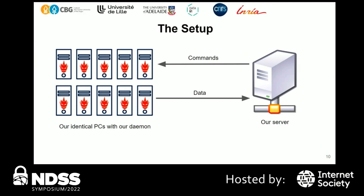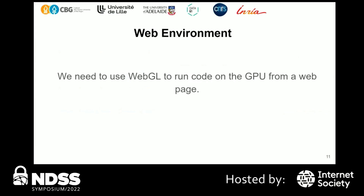We have our server where we want to collect data, and all our identical machines. We coded a daemon that sits on each machine. Our server can interact with this daemon and tell it which command to run. The daemon executes the code on the computer and sends data back to the server. To do this on the web, we use WebGL to run code in a web page, since it is the standard API for GPU calculations in the browser.